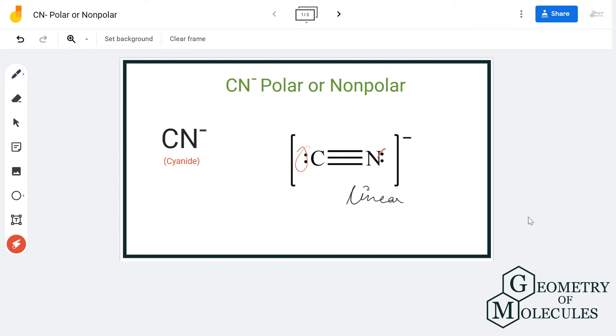When it comes to electronegativities, carbon has an electronegativity value of 2.55 and nitrogen is 3.04. When you calculate the difference, it is higher than 0.4, and if the difference is higher than 0.4, the bond is polar.